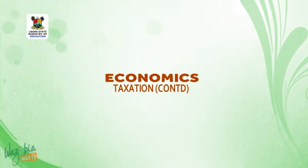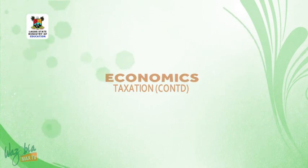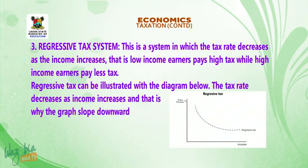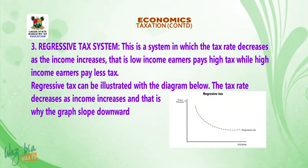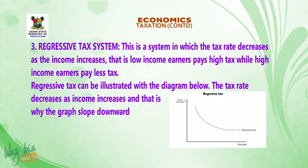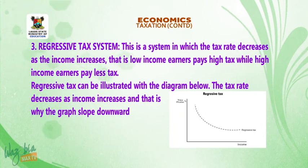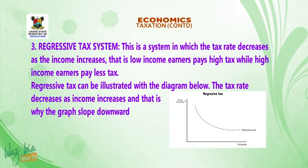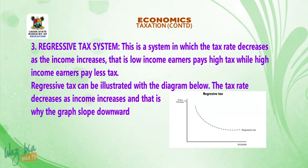Welcome back. Let us consider the third system of tax — regressive tax. This is a system in which the tax rate decreases as the income increases. That is, low-income earners pay high tax while high-income earners pay less tax. The tax rate decreases as the income increases, and that is why the graph slopes downward.